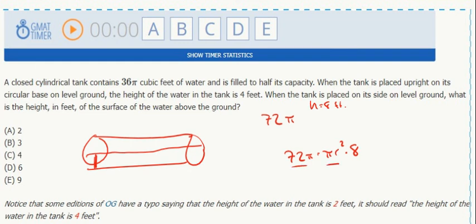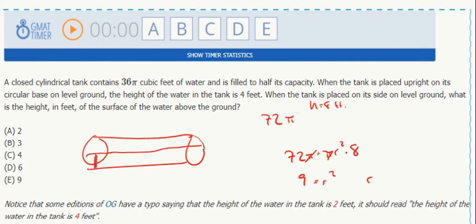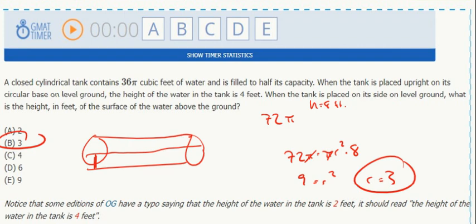So 72π equals πr²h. Cancel π, divide by 8, 9 equals r², r equals 3, and that should be the answer - the radius is 3.